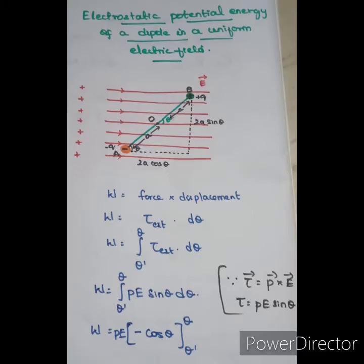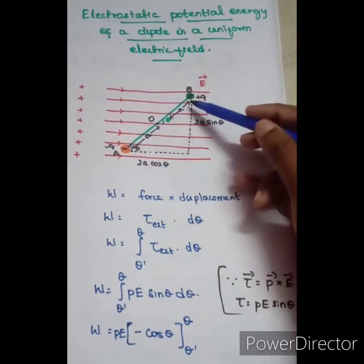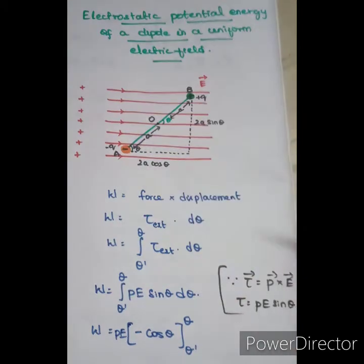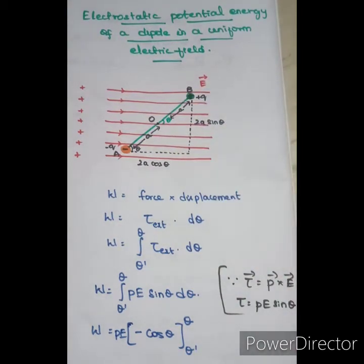Electrostatic potential energy in a uniform electric field. Let's define the dipole: a dipole has a negative and positive charge — equal and opposite charges separated by a small distance. The positive and negative charges are each at distance 'a' from the center point O, giving a total separation of 2a. This is the dipole.